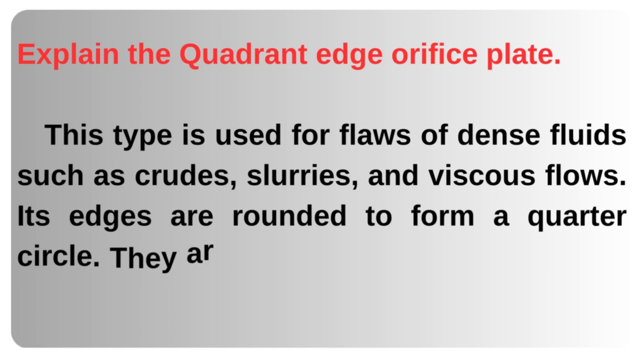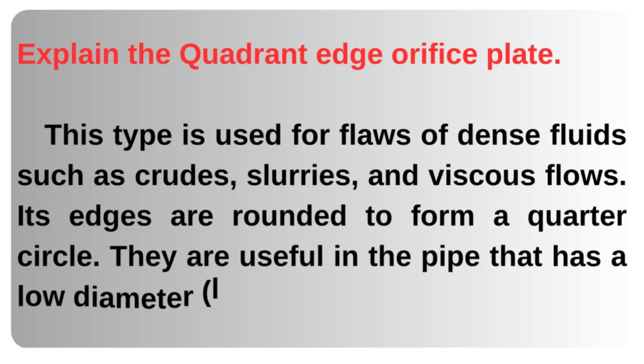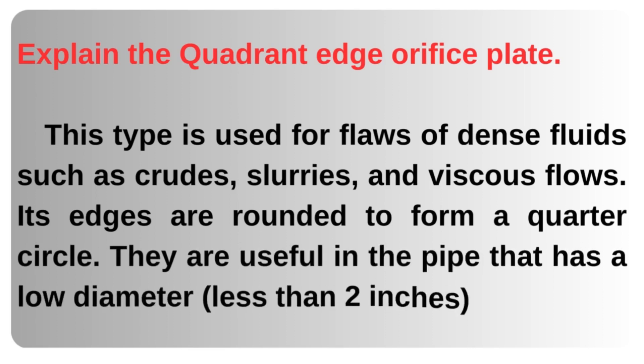The quadrant edge orifice plate is used for flows of dense fluids such as crudes, slurries, and viscous flows. Its edges are rounded to form a quarter circle. They are useful in pipes with a low diameter of less than two inches.